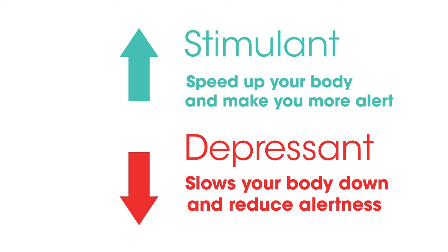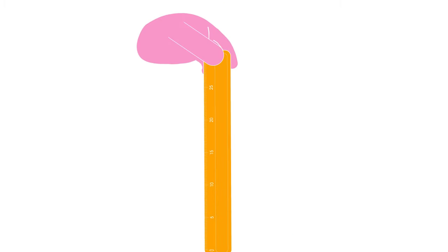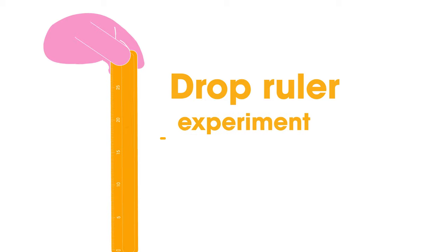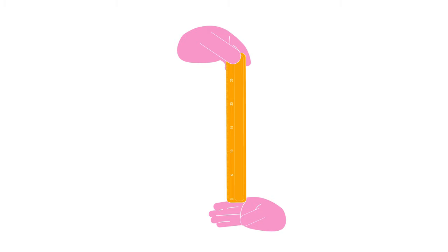For example, caffeine is a stimulant and alcohol is a depressant. One simple way to measure how either drug use or distraction in the environment might alter your reaction time is to do the drop ruler experiment. One person drops a ruler between the subject's thumb and forefinger, which is placed at the zero centimeter mark.